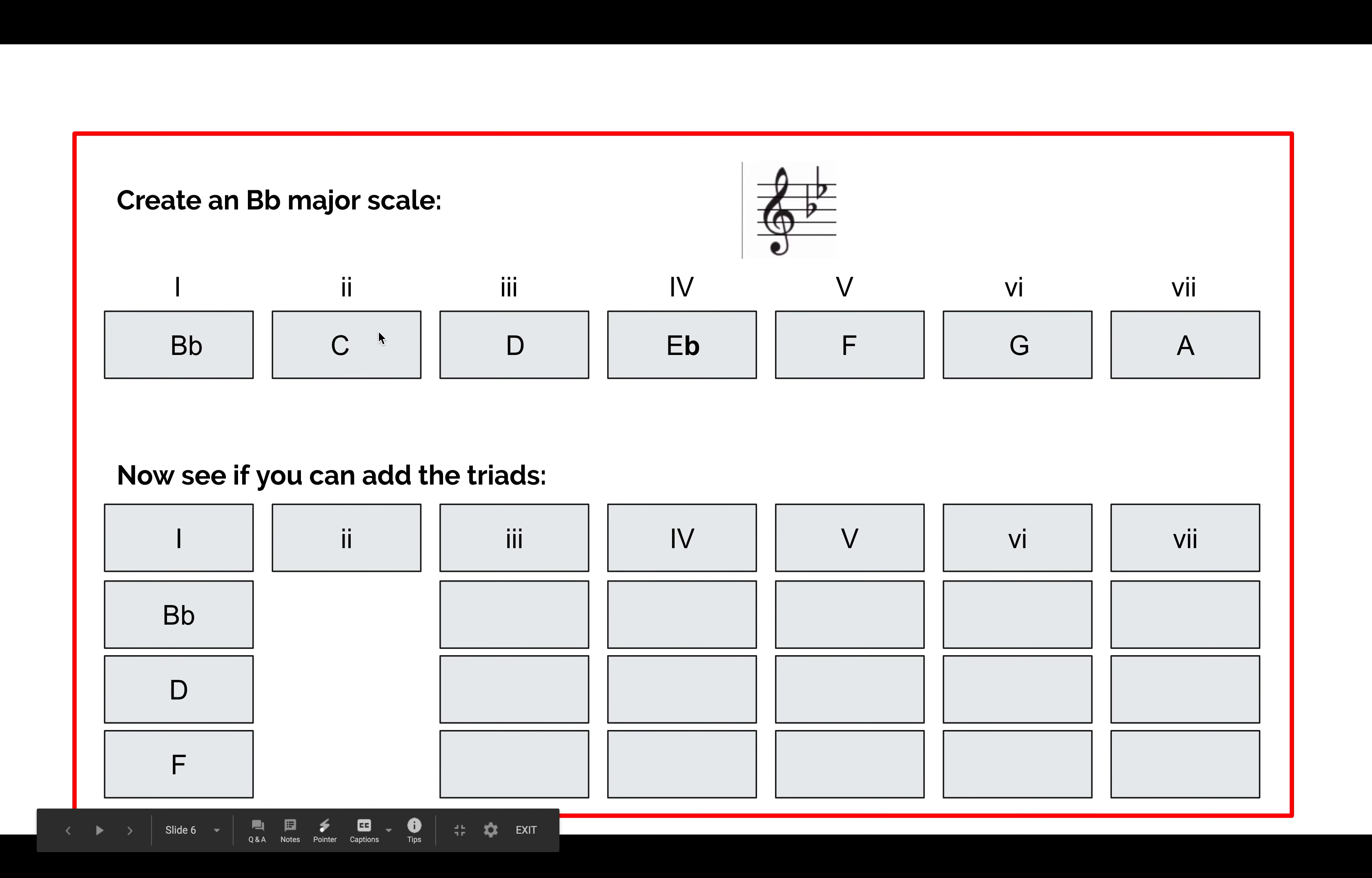Chord II is going to start on the C, because that is our second note. C, skip, play, E-flat, skip, play, G. So, then, I want you to construct triad III, IV, V, VI, and VII in B-flat major.